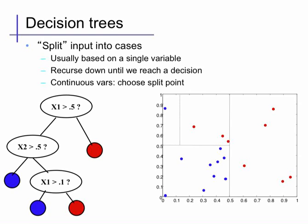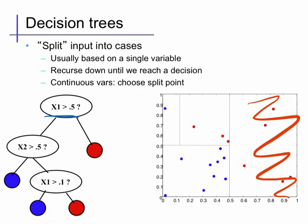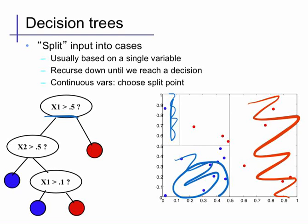The output for this function is shown on the right, where the first comparison, x1 greater than 0.5, leads us to determine that this entire region will predict red. The second comparison, x2 greater than 0.5, leads us to make a decision in this region. If x2 is less than 0.5, we decide blue, leading to blue in that entire region. Finally, we compare x1 to 0.1 in the remaining region. If x1 is less than 0.1, we predict blue; if it's greater, we predict red in that region.